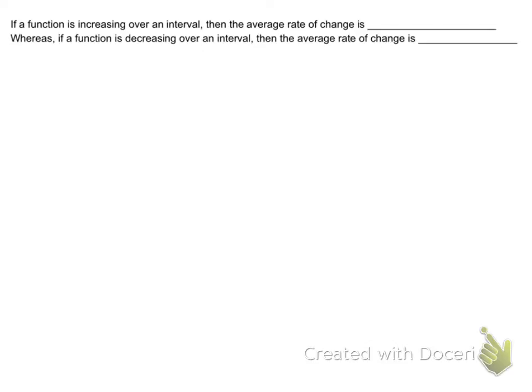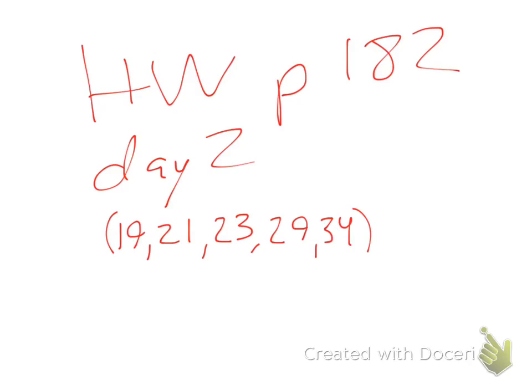If a function is increasing over an interval, then the average rate of change is positive. And if it's decreasing over an interval, it is negative. And that's all I got for you guys. Increasing because of positive slope. Decreasing because it has a negative slope. These are all things that you should be making your connections for. Day two homework is 19, 21, 23, 29, and 34. Have a great day.